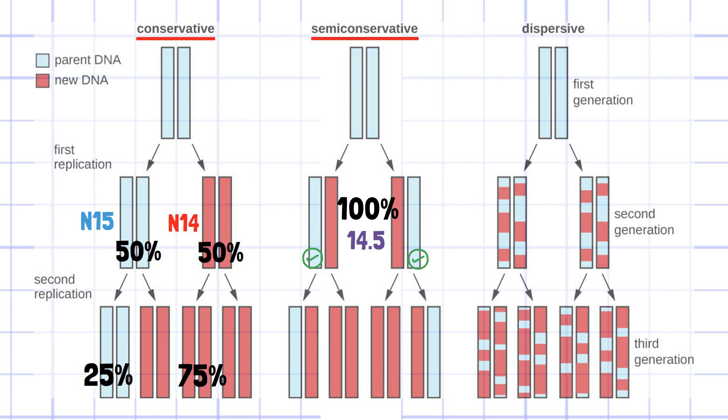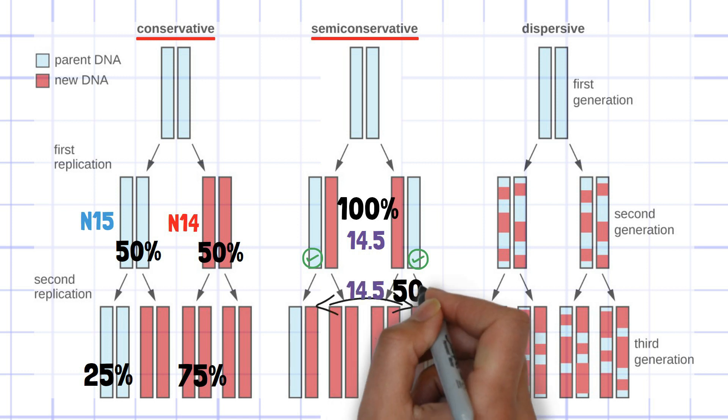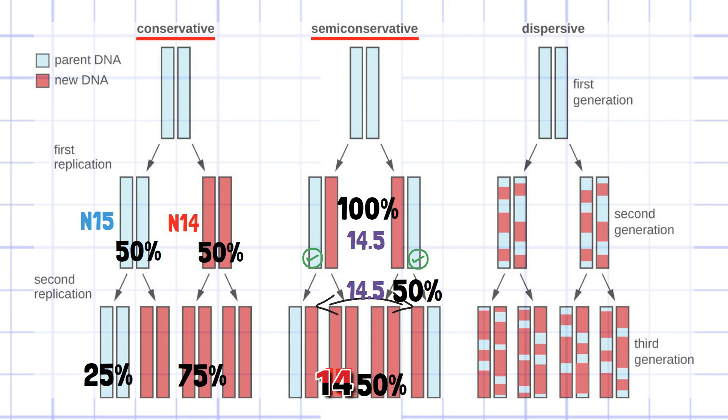After the second division, 50% is at 14.5 and 50% is at 15. Then after the third division, 25% is at 14.5 and 75% is at 14.